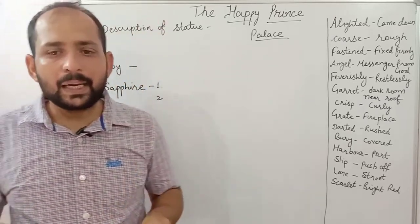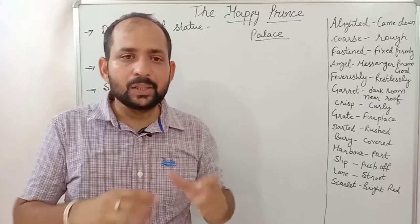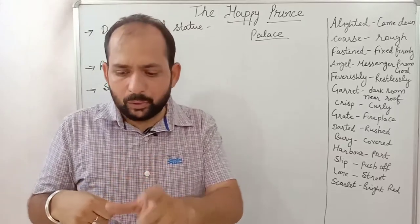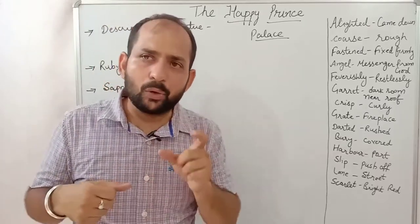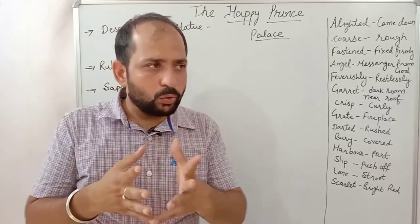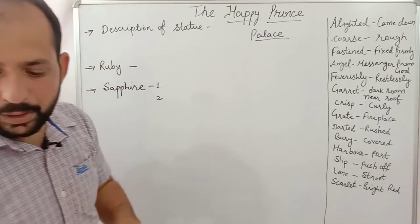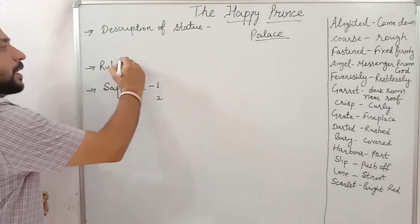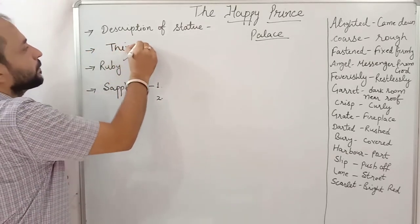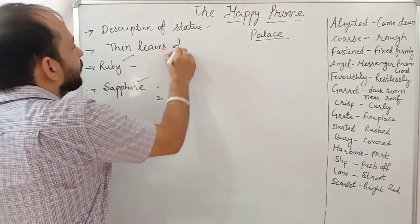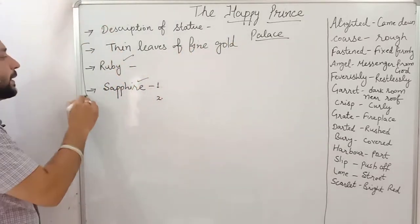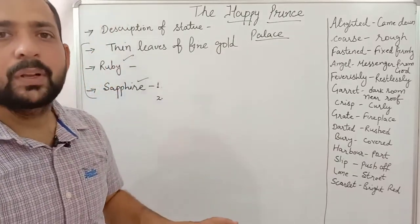A large red ruby glowed on his sword hilt. The ruby is also a very fine precious stone. So the Happy Prince statue had a ruby on the sword hilt, sapphires for eyes, and thin leaves of fine gold decorating it — the makers had made it very attractive.